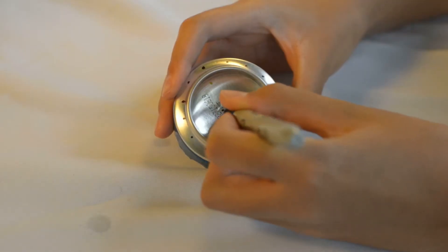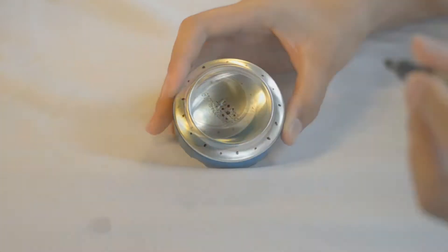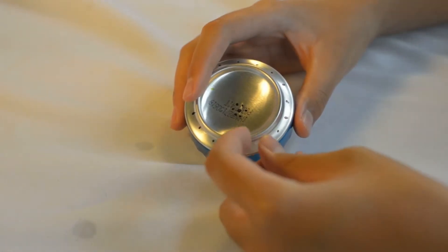To make the fuel holes, mark one dot in the center and six dots around it. Puncture your markings.